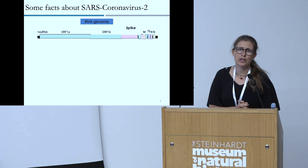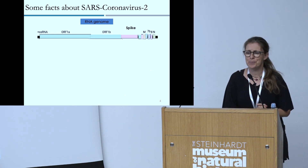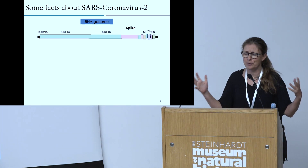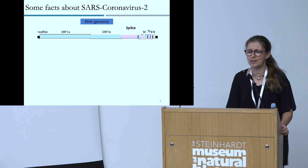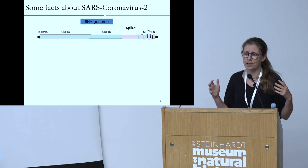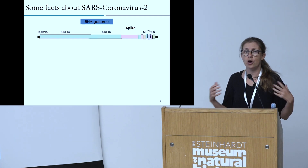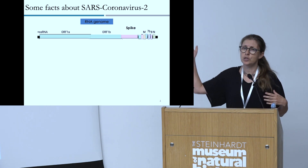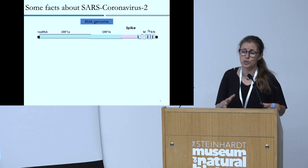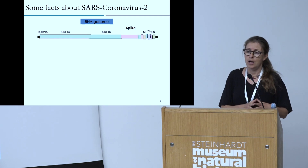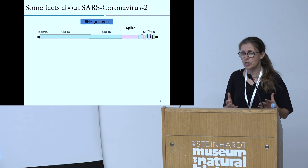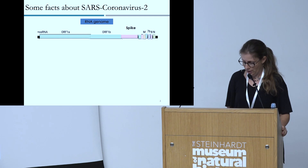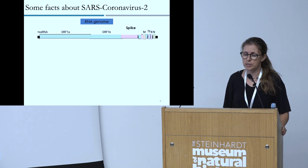I'll begin with a brief introduction, although I'm sure you all know these details. SARS-CoV-2 has an RNA genome of approximately 30,000 bases. We have the layout of the different genes here. I'm not going to be talking about most of these genes, but I will be talking about one gene — the gene that encodes the spike, shown in pink, which is the color coding for the rest of this presentation.